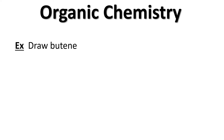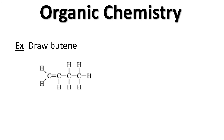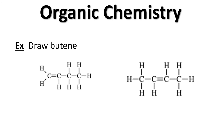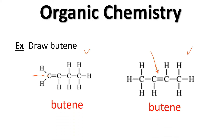Now here's a challenge: draw butene. Butene has four carbons, so you draw a chain of four and put the double bond in the first spot — probably 25 out of 30 people would make that version. However, the other five people would put the multi-bond in the middle. Both answers are correct, but they are clearly different molecules. If we name them, they would both be called butene, but we know they are different.